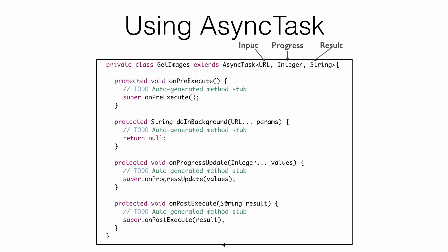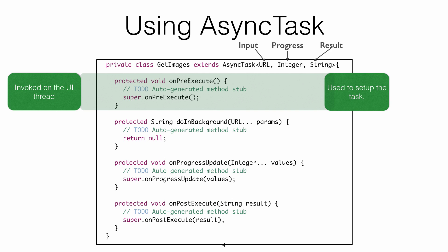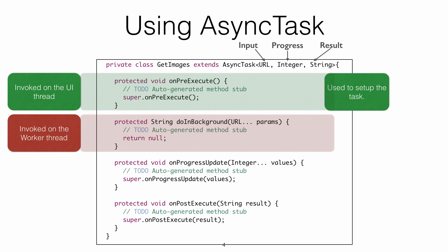onPreExecute is invoked in the UI thread and is used to set up the task. For example, you might use it to show a progress dialog or alert dialog, or set up something in the user interface to be ready for the result.